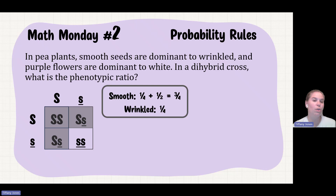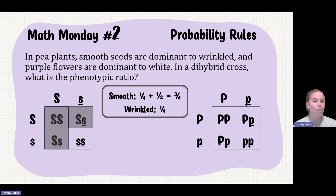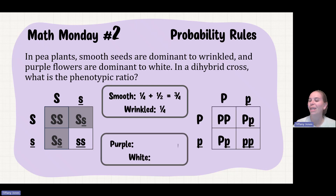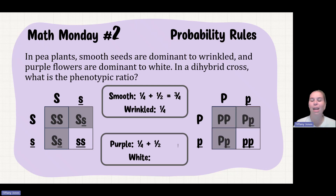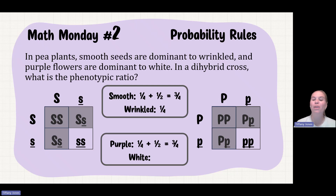If I then bring in the purple flowers, both parents are heterozygous for purple. Crossing two heterozygous parents, I find one-fourth are homozygous dominant — so they'll be purple — and one-half are heterozygous, also purple. The probability of purple is one-fourth plus one-half, which gives me three-fourths. And one-fourth will be homozygous recessive, or white.